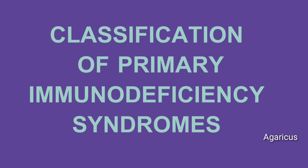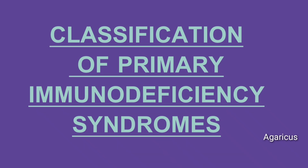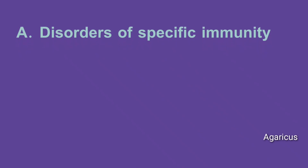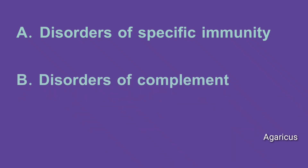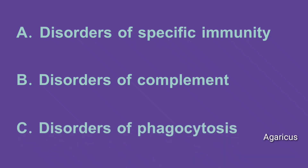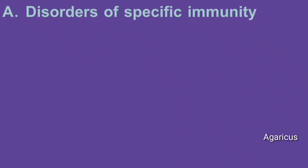Now we are discussing the classification of primary immunodeficiency syndromes. It is divided into three categories: first, disorders of specific immunity; second, disorders of complement; third, disorders of phagocytosis. Disorders of specific immunity is again divided into subtypes.